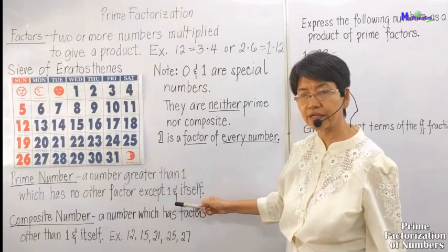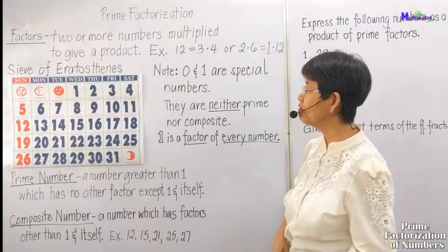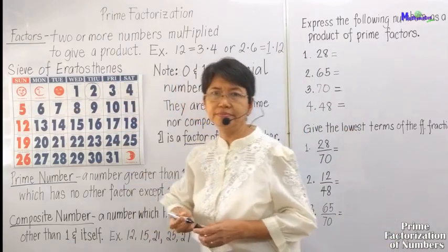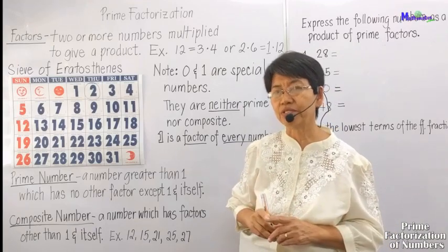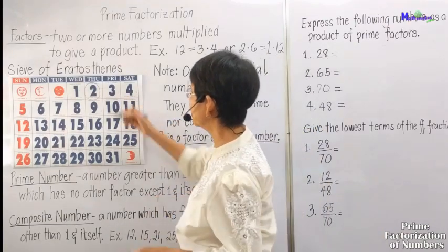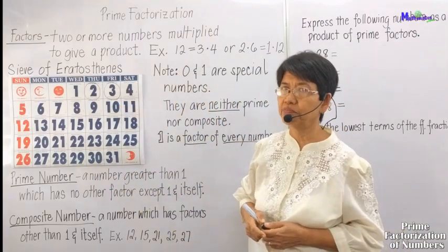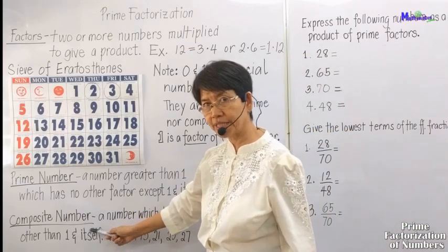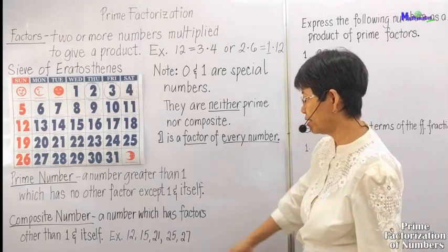Another term is prime number. A prime number is a number greater than 1 which has no other factors except 1 and itself. An example is the number 2 — there are no other factors except 1 and 2. Also the number 3 — it has no other factors except 1 and 3.